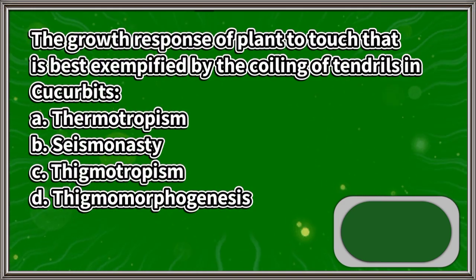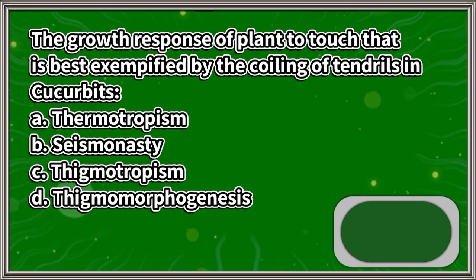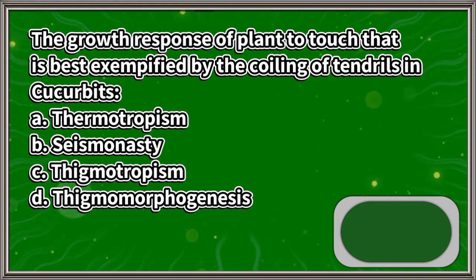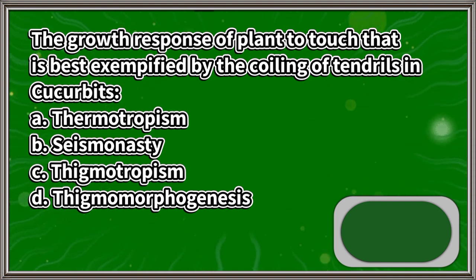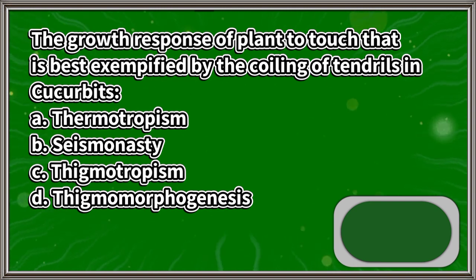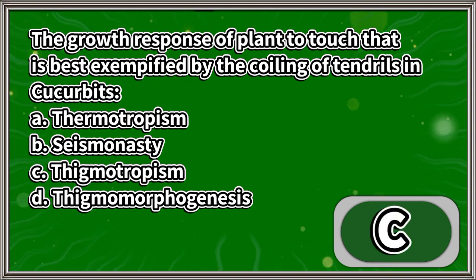The growth response of a plant to touch, best exemplified by the coiling of tendrils in cucurbits: A. Thermotropism, B. Seismonasty, C. Thigmotropism, D. Thigmomorphogenesis. The answer is letter C.